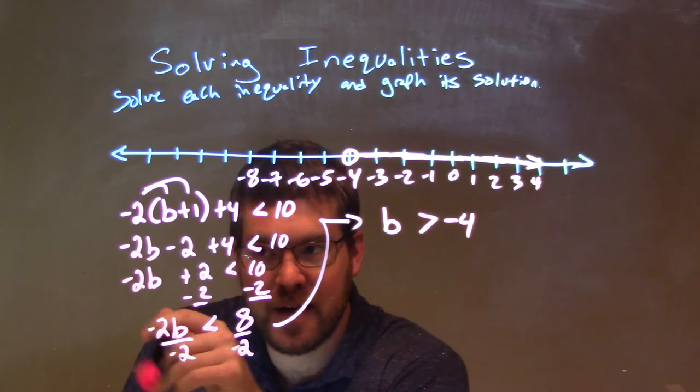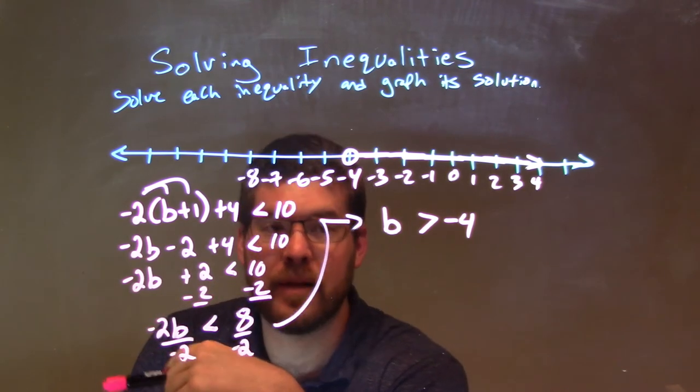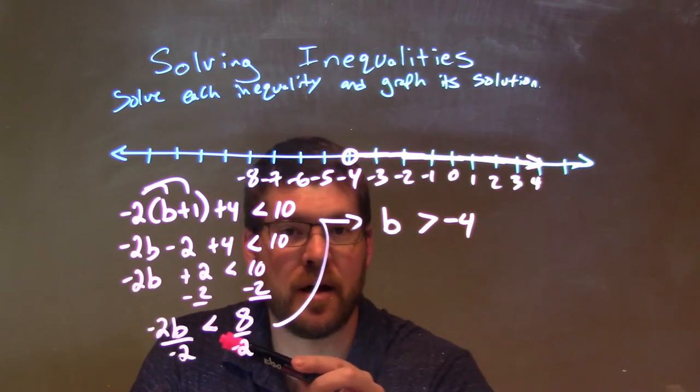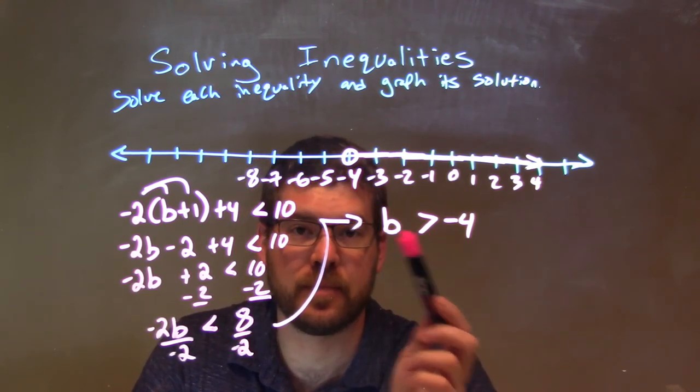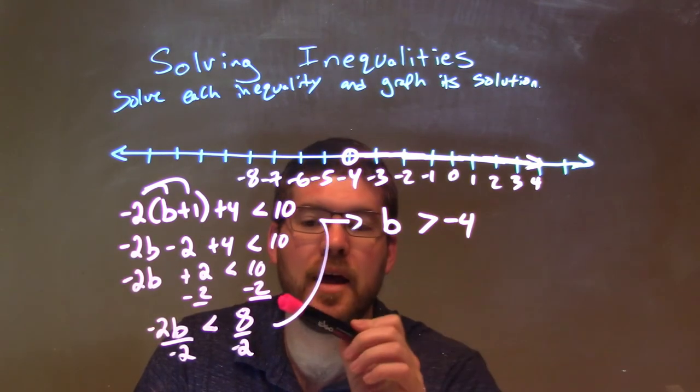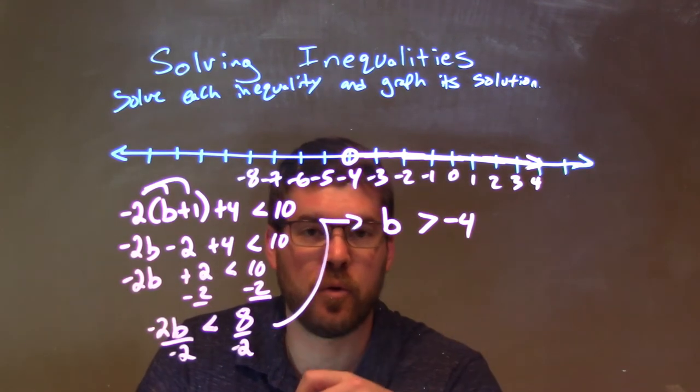Now, I divide by negative 2 on both sides. That gives me a positive b by itself, but the inequality less than sign turns to a greater than sign. Remember, when you divide by a negative over the inequality, the sign flips. And 8 divided by negative 2 is negative 4.